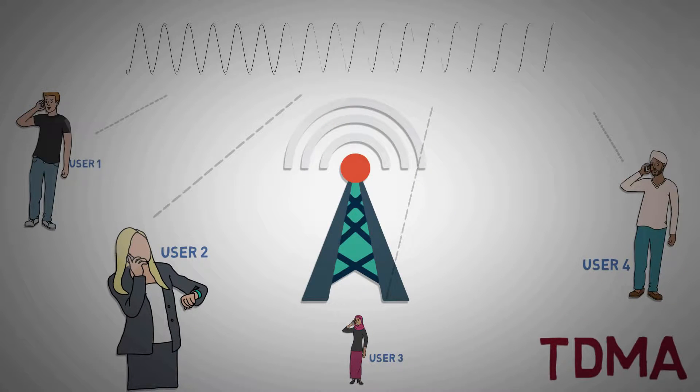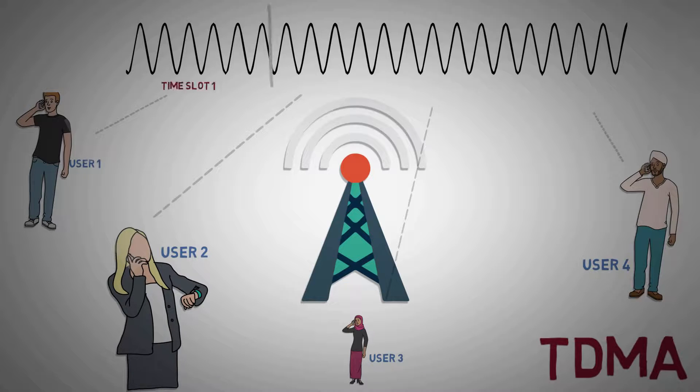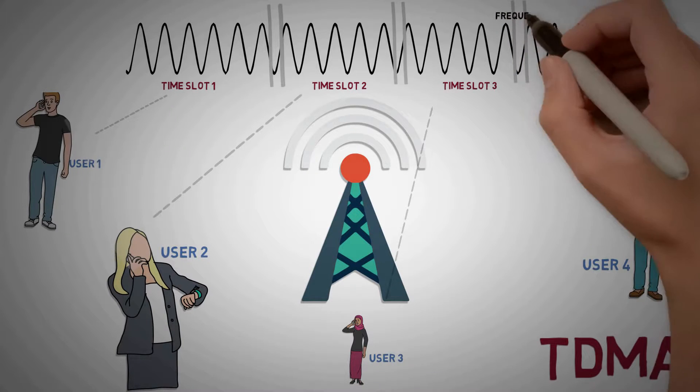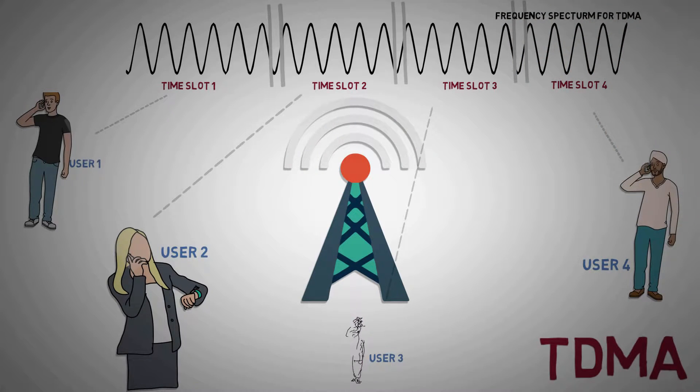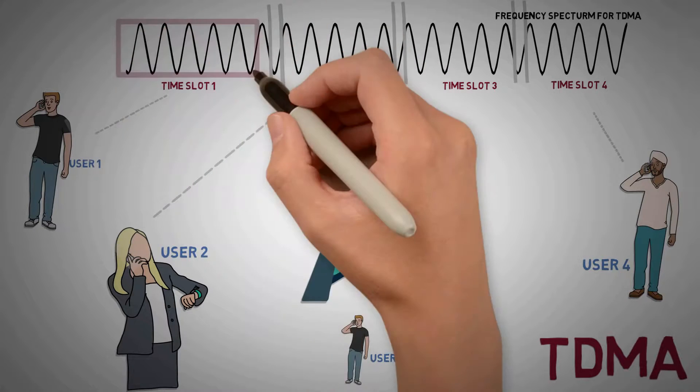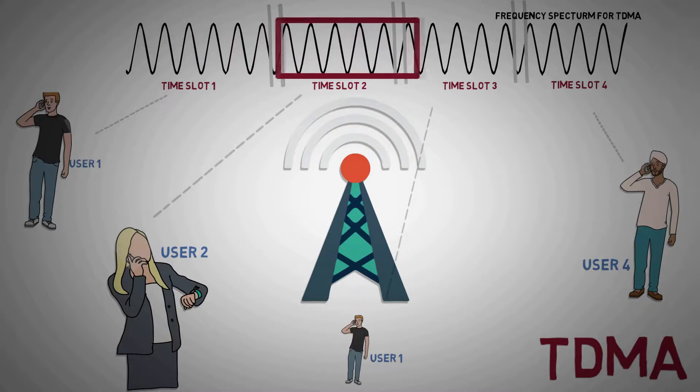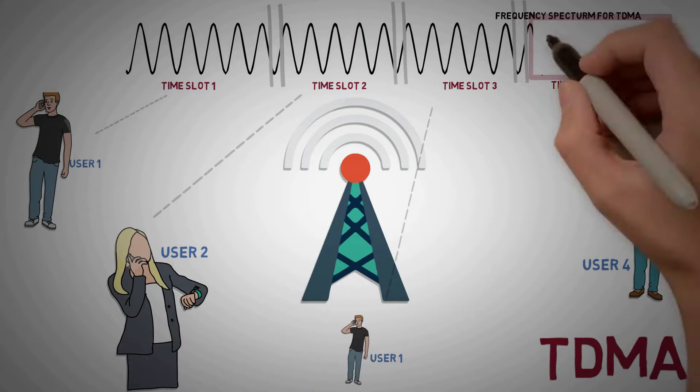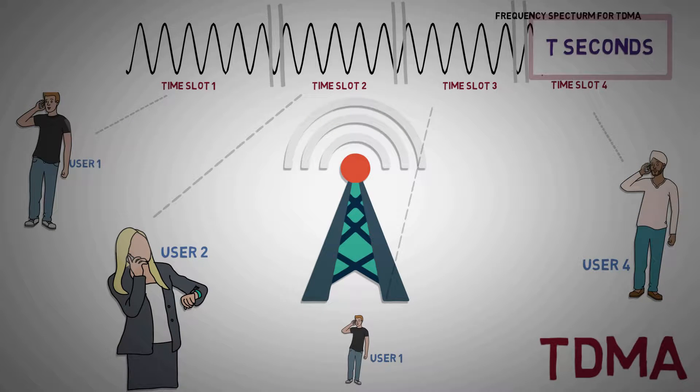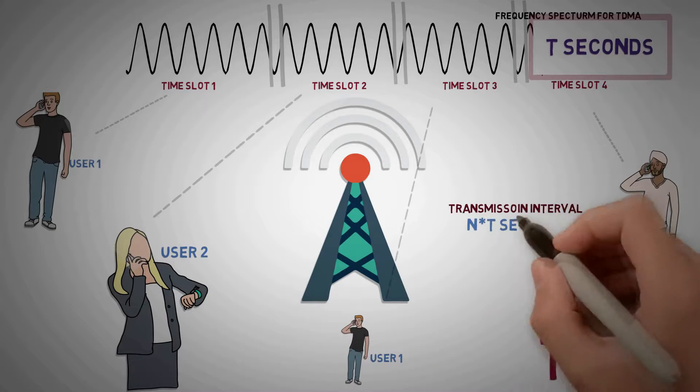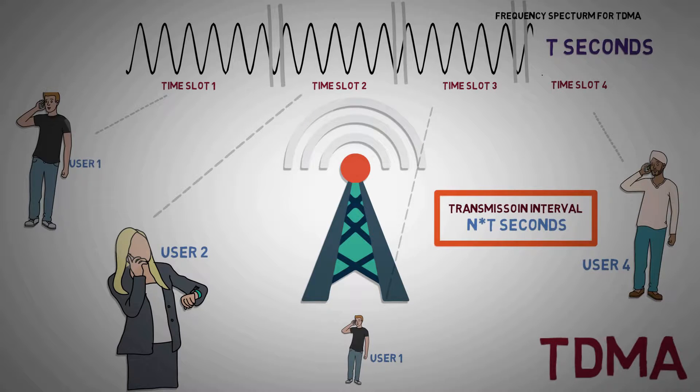TDMA, which uses time division multiplexing, allows multiple users to share a common frequency band by allocating different time slots. Thus, in an n channel TDMA, where each channel is given a time slot of 2 seconds, signals coming from each user will be transmitted at intervals of n into 2 seconds.